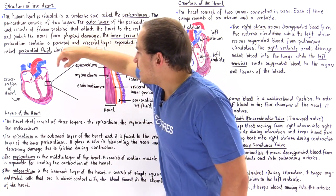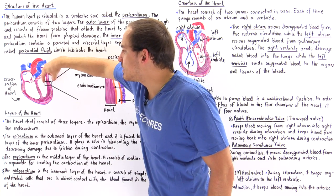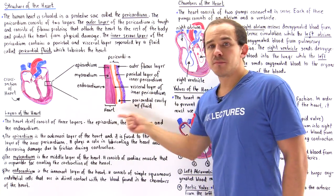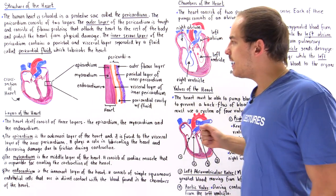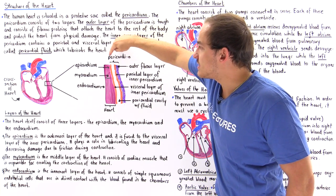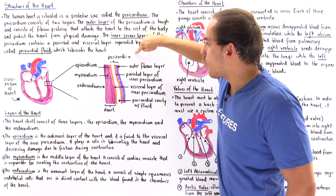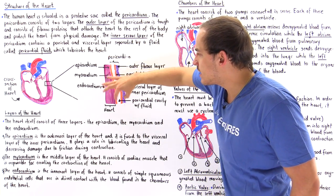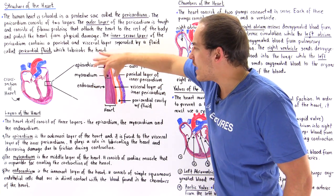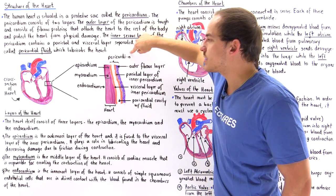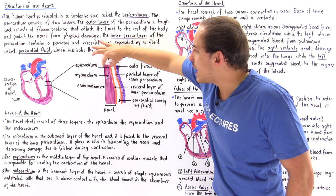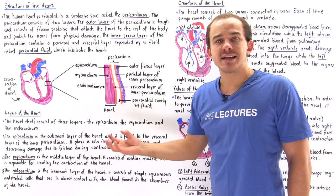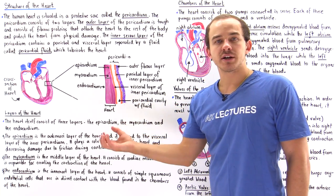If we zoom in on this segment of the diagram, we get a blown-up image that consists of the pericardium. This entire layer, not including the red layer, is the pericardium. The red layer is the actual heart itself.